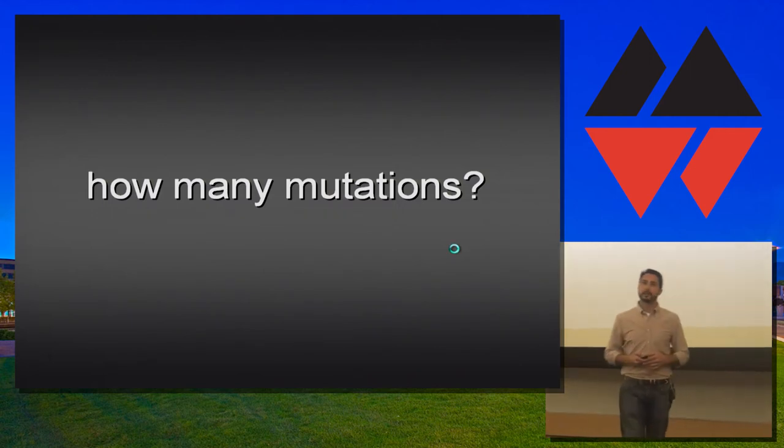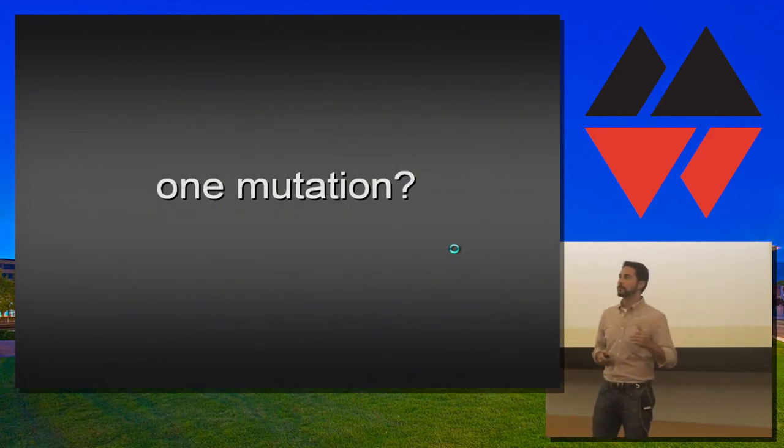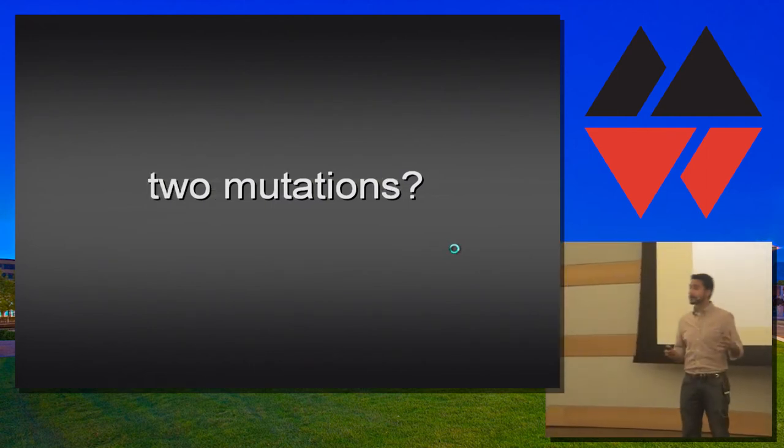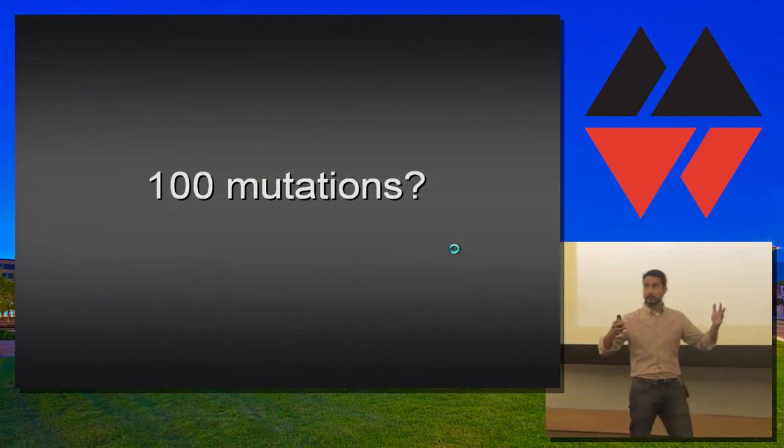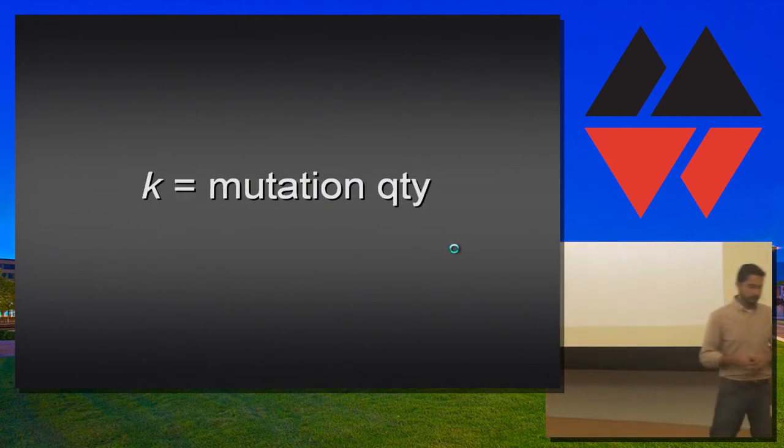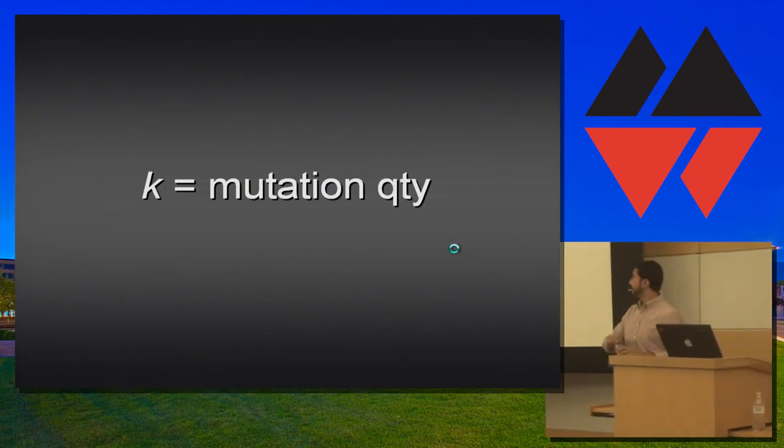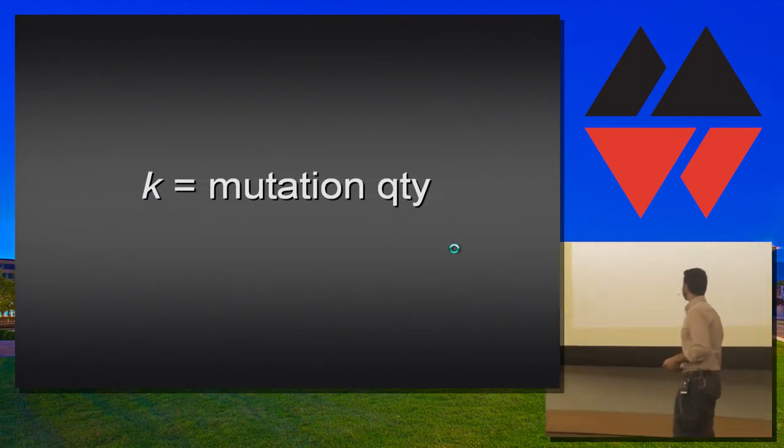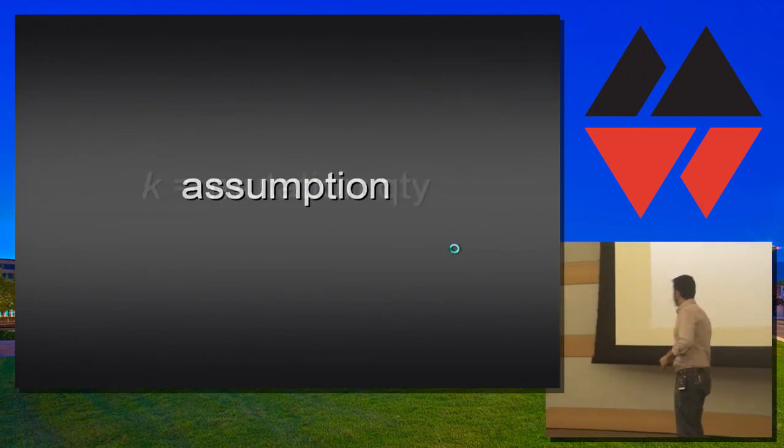So, how many mutants should we have? In the demo I just showed you, we had only one mutation. So, should we have more than that? Should we mutate the entire source file and run with that? Well, let's agree on something before. Let the mutation quantity, let it be represented by the variable K, the aptly named variable K.